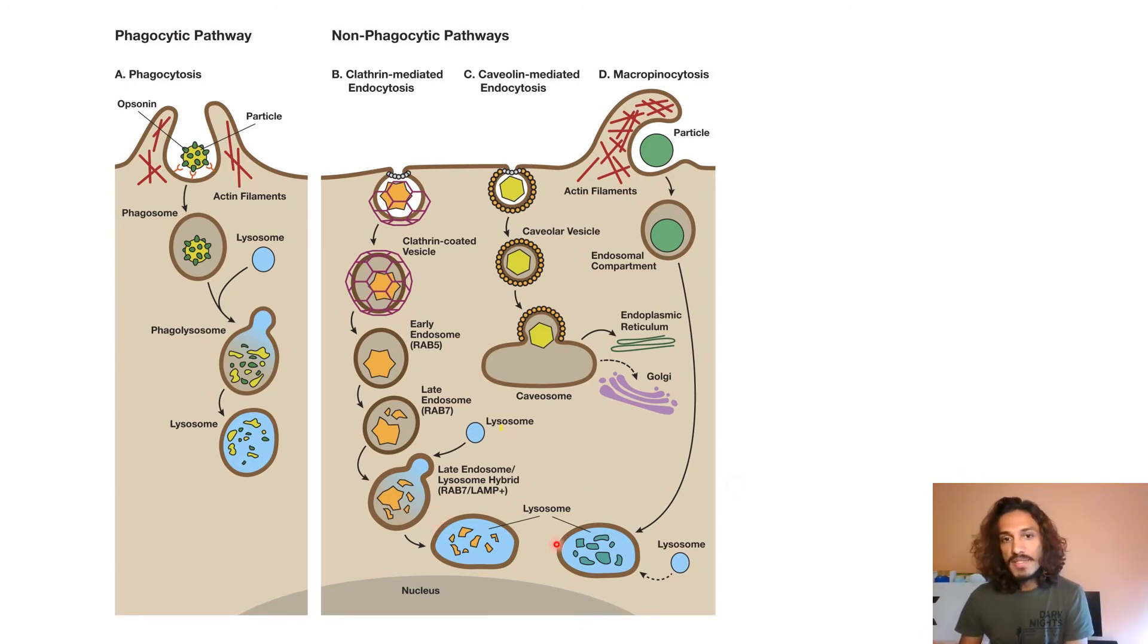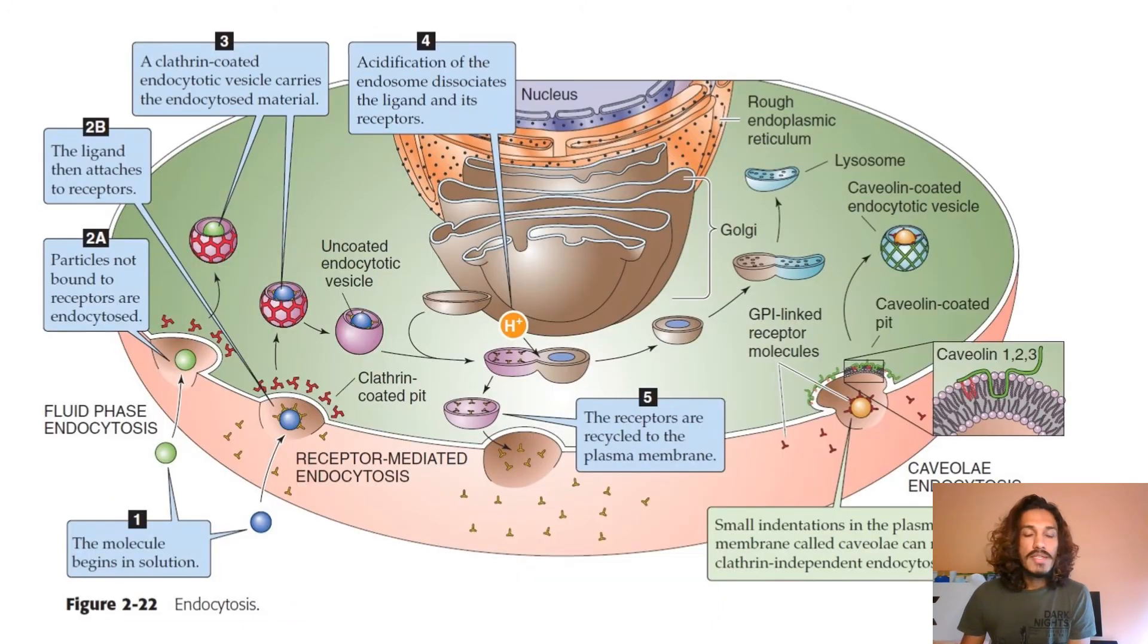Finally, multivesicular bodies are formed. We have the early endosome, late endosome, lysosomes bind, and finally multivesicular bodies are formed. From there, whatever is happening can be trafficked inside; exosomes can come out. A lot of processes can take place here.